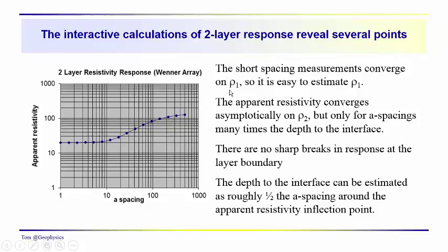The short spacing measurements converge on rho one. So it's easy to estimate rho one. That was 20 ohm meters. The apparent resistivity converges asymptotically on rho two. So we know that we're kind of in the 120, 130 range here. But it takes, you have to get really, you have to get out to A spacings that are many times the depth to the interface.